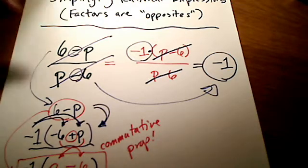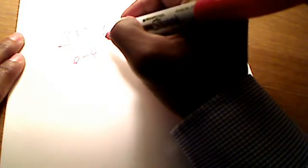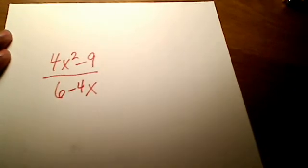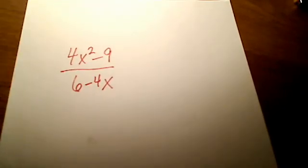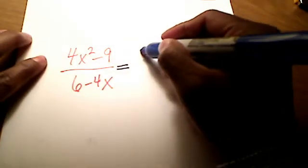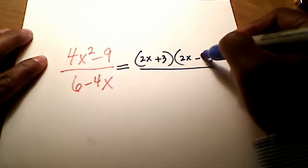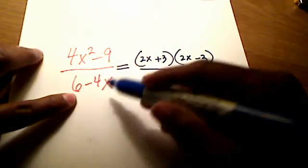How about simplifying something like this? 4x squared minus 9 over 6 minus 4x. Now this one's a little bit trickier, a little bit different here, a little bit more involved. But I hope you recognize that the numerator is a difference of squares. And I showed in a previous video that whenever you try to simplify fractions like these rational expressions, the first thing you should do is factor.